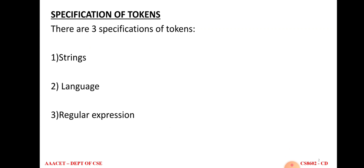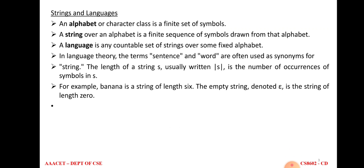Tokens are specified by three terms: strings, languages, and regular expressions. First, what is an alphabet? An alphabet or character set is a finite set of symbols. What is a string? A string is a sequence of symbols. What is a language? A language is a set of strings. For example, consider the alphabet set X = {a, n, t}. The strings 'a', 'n', 't', 'an' are sequences of characters. A language L = a^n b^n is an example of a language.